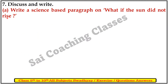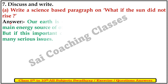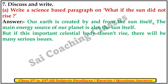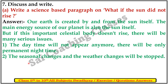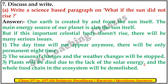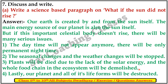Seventh: Discuss and write. A. Write a science-based paragraph on what if the sun did not rise. Our earth was created from the sun itself. The main source of energy for the planet is also the sun. But if this important celestial body did not rise, there would be many serious issues. Daytime would not appear anymore; there would only be permanent nighttime. Seasonal changes and weather changes would stop. The plants would die due to lack of solar energy and the whole frozen ecosystem would be demolished. Lastly, our planet and all its life forms would be destroyed.